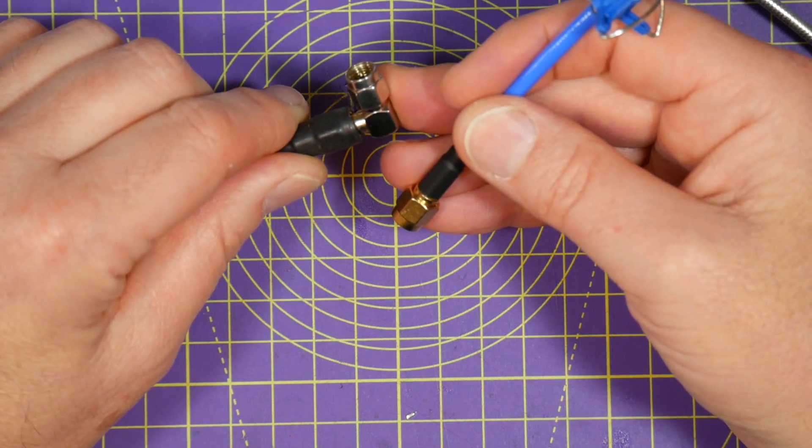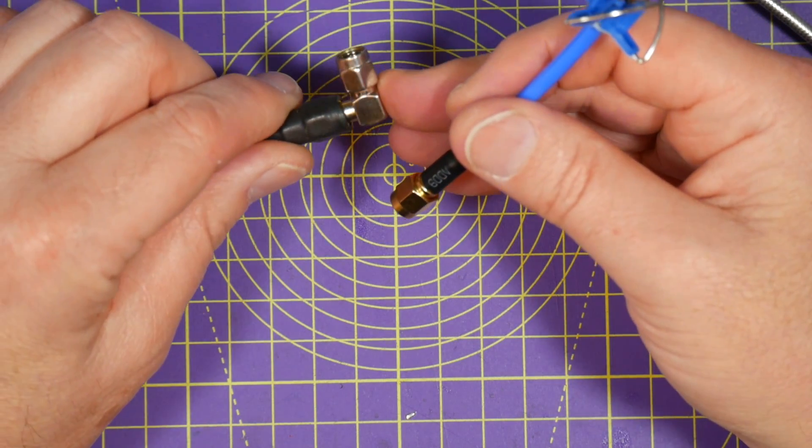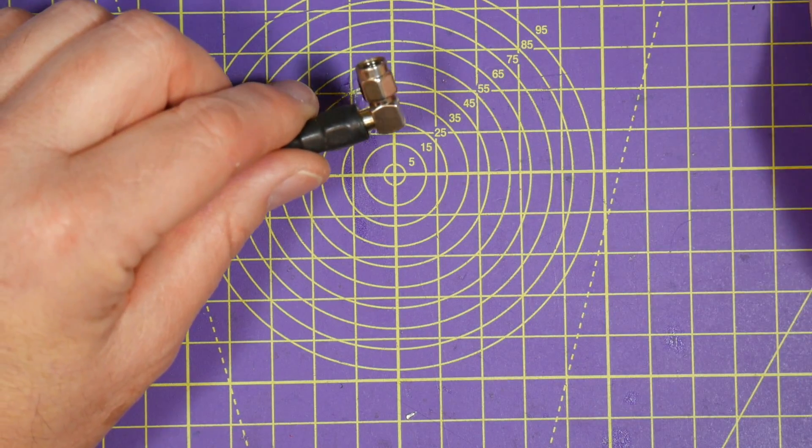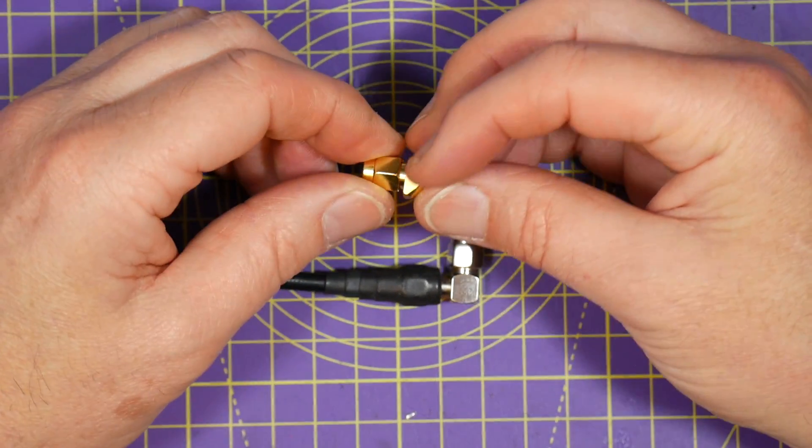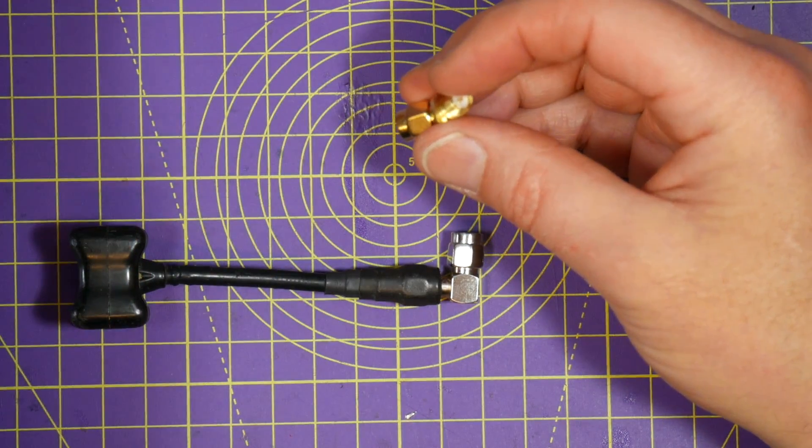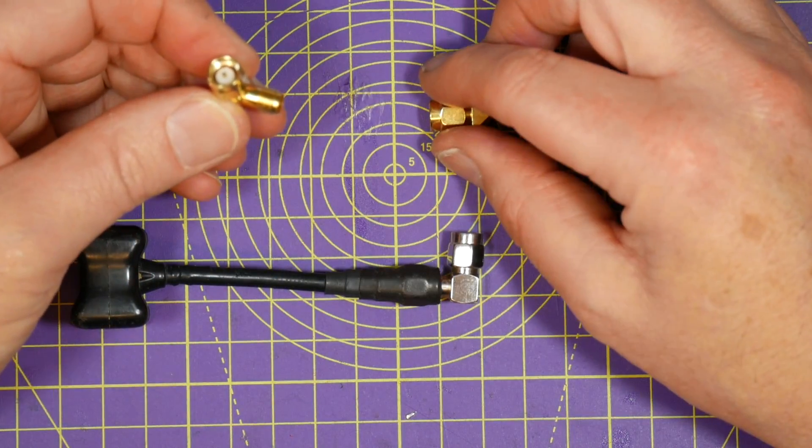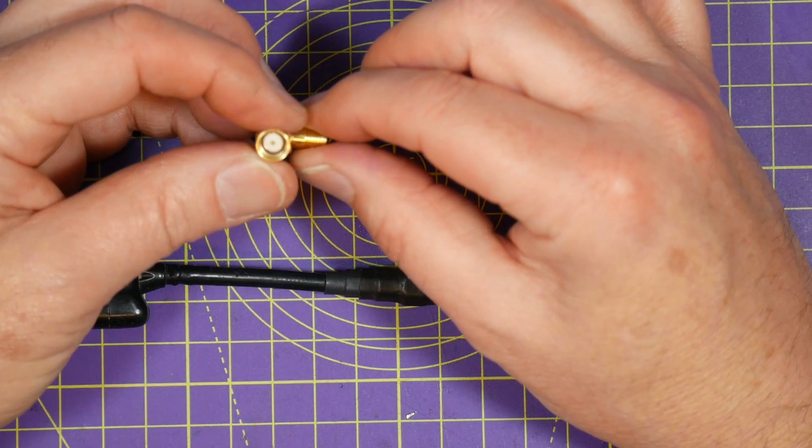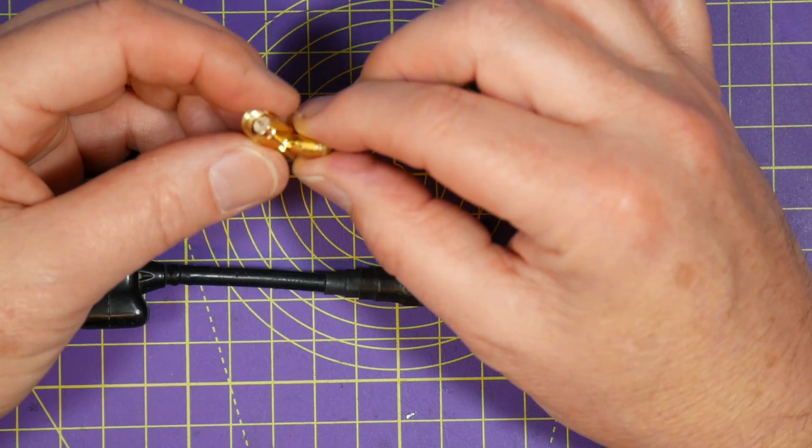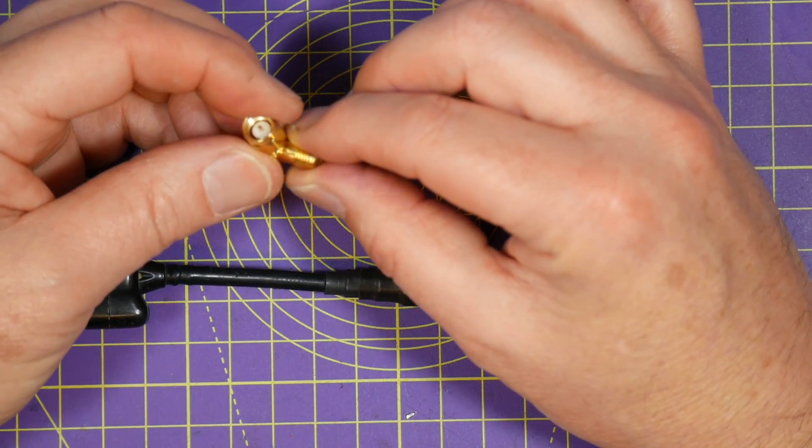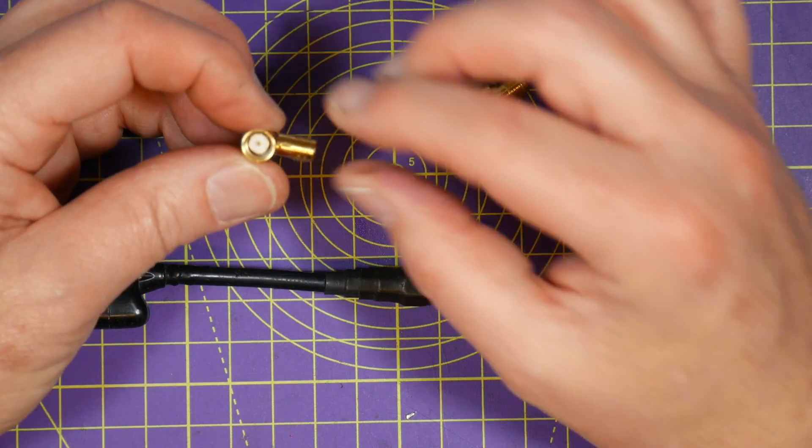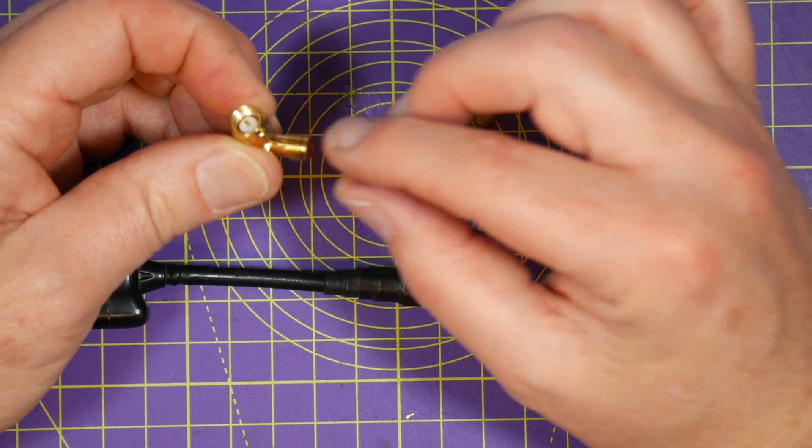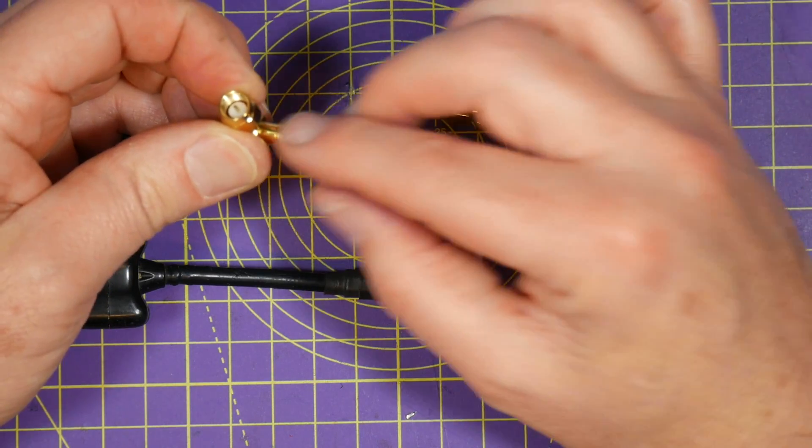Now, if you do get the wrong gender or type of SMA or RPSMA, there's loads of adapters that you can get. Now, these can be straight or angled. And this is a convenient way of just fixing up problems that you've got. But to be honest, the chances are that when you buy one of these, you'll get the wrong one as well. And you just double your problem, which is really, really annoying.